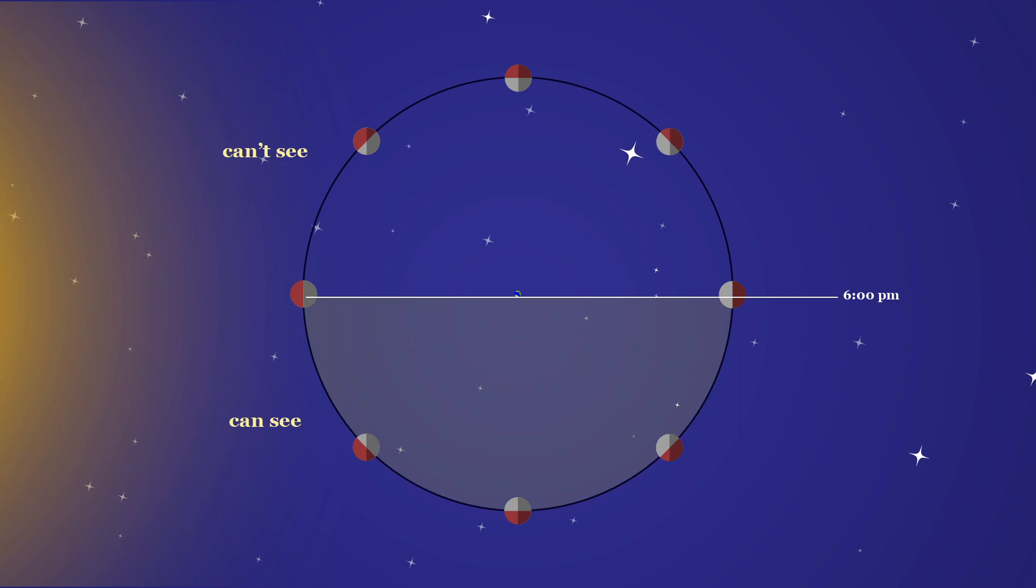Note that our observer can see everything on one side of the tangent plane and nothing on the other as this is the region hidden by Earth.